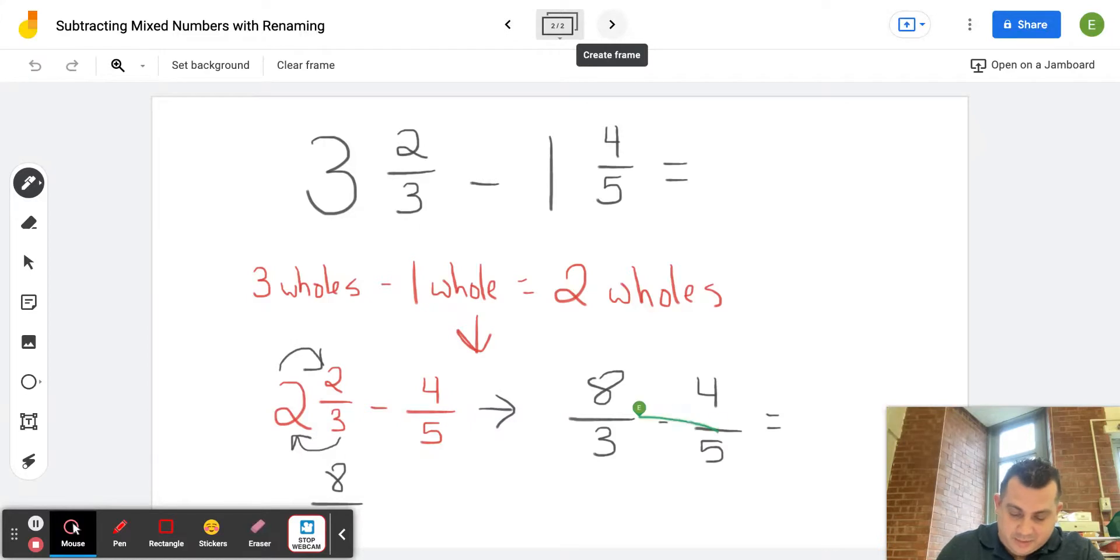So I'm going to find my common denominator first by doing three times five, which gives me 15. Now I'm going to do my cross multiplication. I'm always going to start, I want to find this amount on the left-hand side, five times eight. Five times eight is 40, and then I'm going to do three times four.